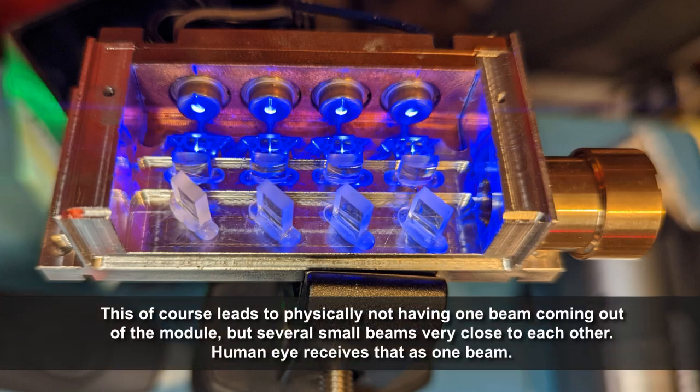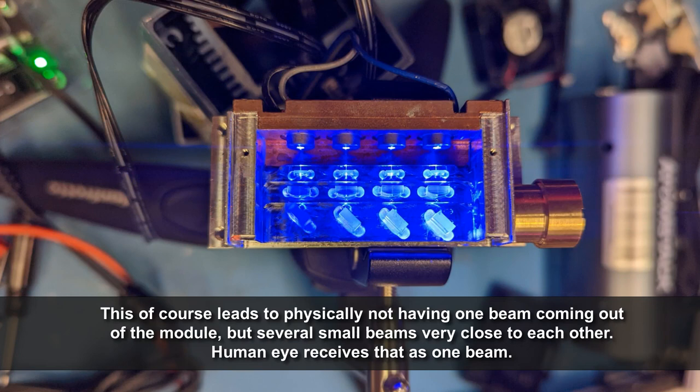This leads to physically not having one beam coming out of the module, but several small beams very close to each other. The human eye receives that as one beam.